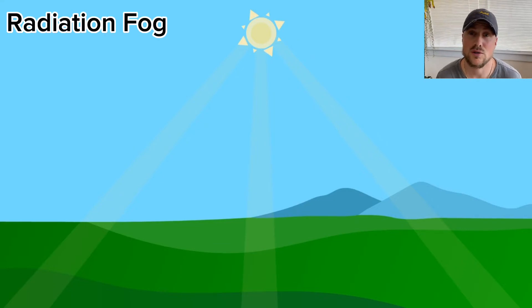Radiation fog, also known as ground fog, is most prevalent in cooler fall and winter nights. Whenever you have warm, moist air in the day get cooled over flat land areas on cool, calm, and clear nights, you'll get radiation fog.